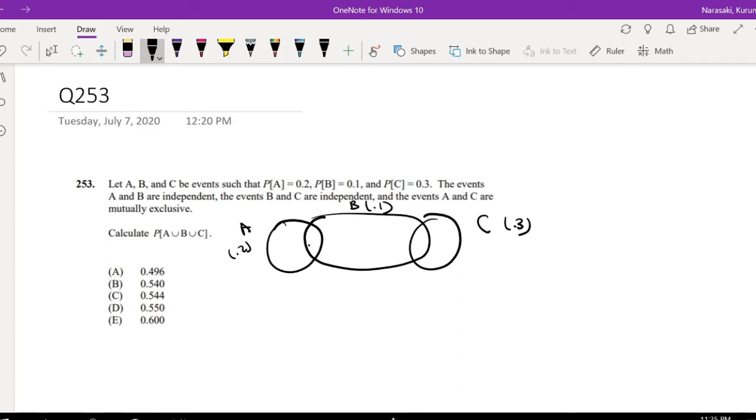So that means the section right here is just going to be 0.2 times 0.1. I'm going to write this formula down here in red: A and B. If they're independent, it's just the probability of A times the probability of B. So this right here is going to be 0.02, and then in here would be 0.03.